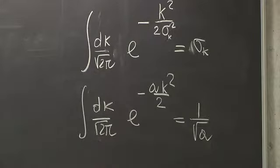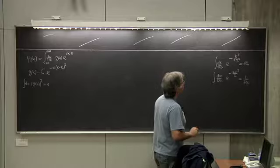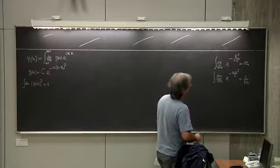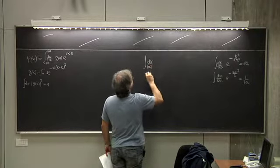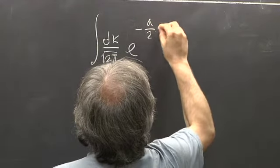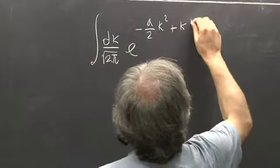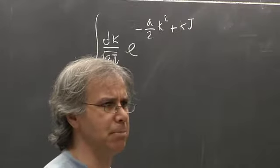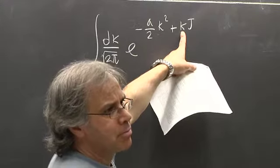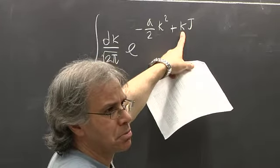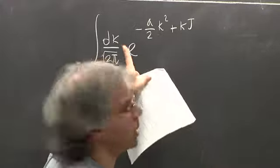We can play considerably on these formulas. Suppose we want to do the integral in dk over square root of two pi, of e to the minus a over two times k squared, plus k times some variable j — a real number. This is a Gaussian with an extra linear term. For large k the quadratic term wins, so the integral converges. Whenever you see k squared plus a linear term in k, you think of completing the square.